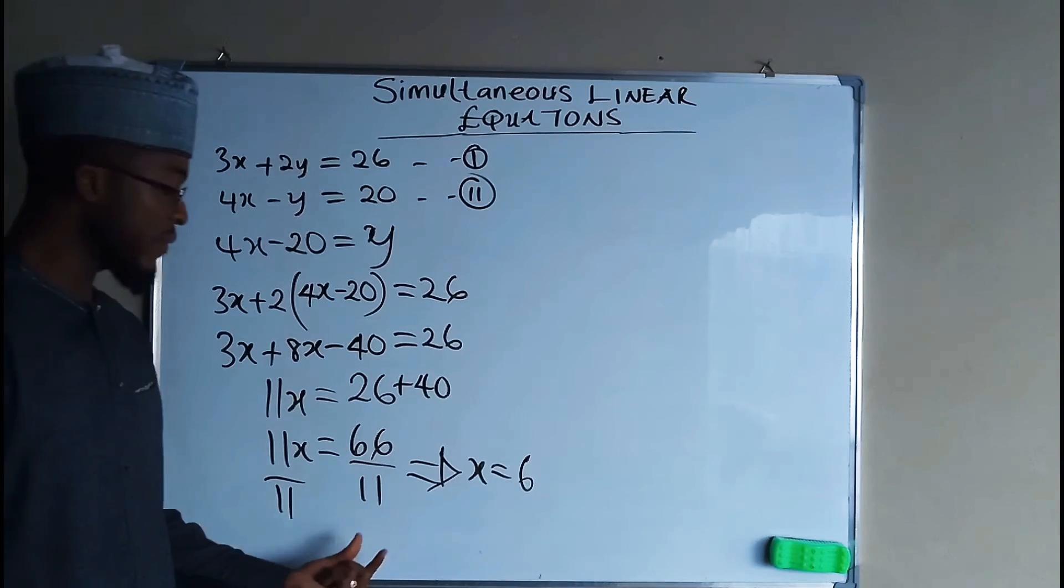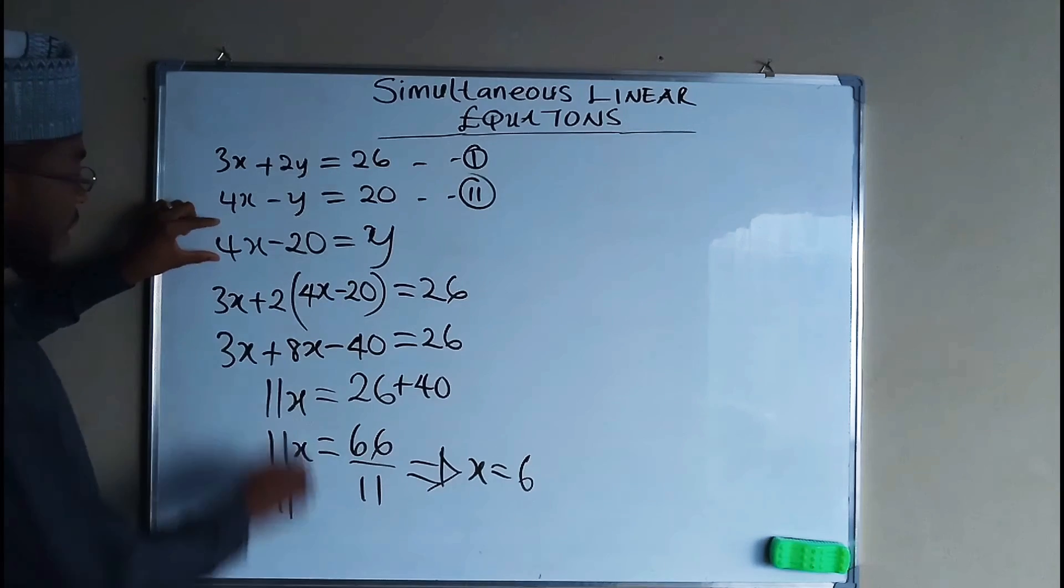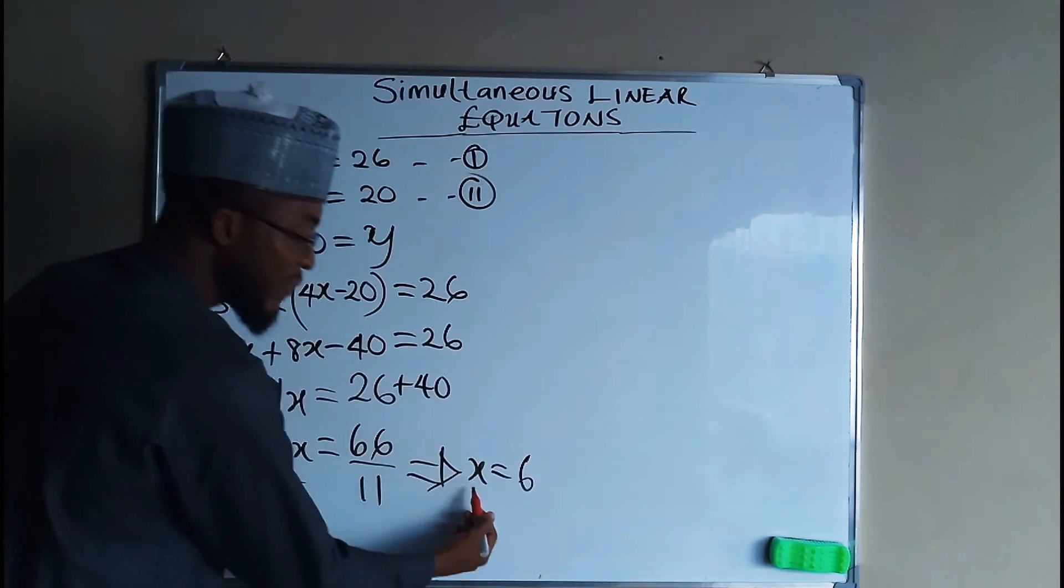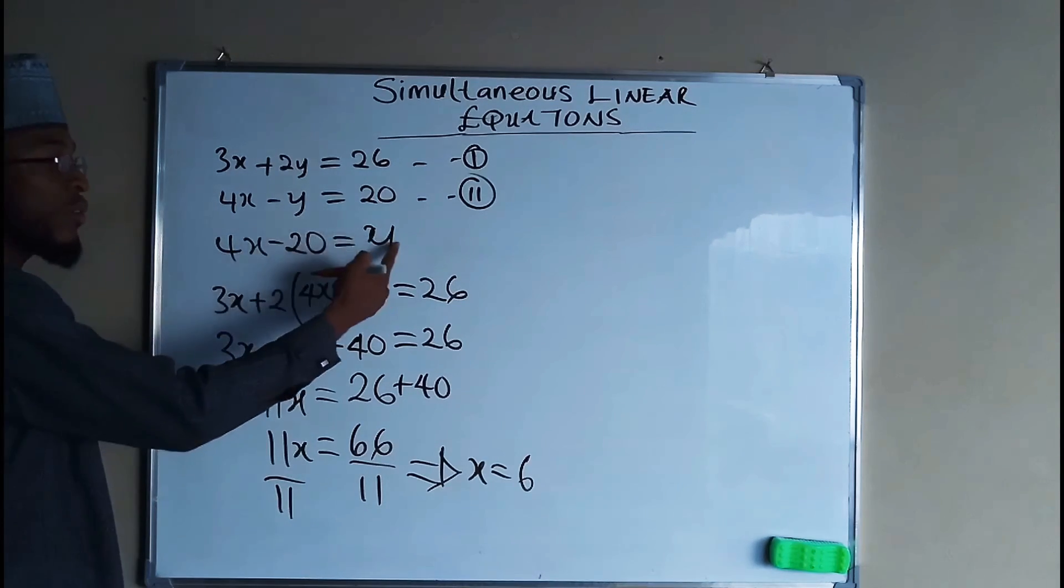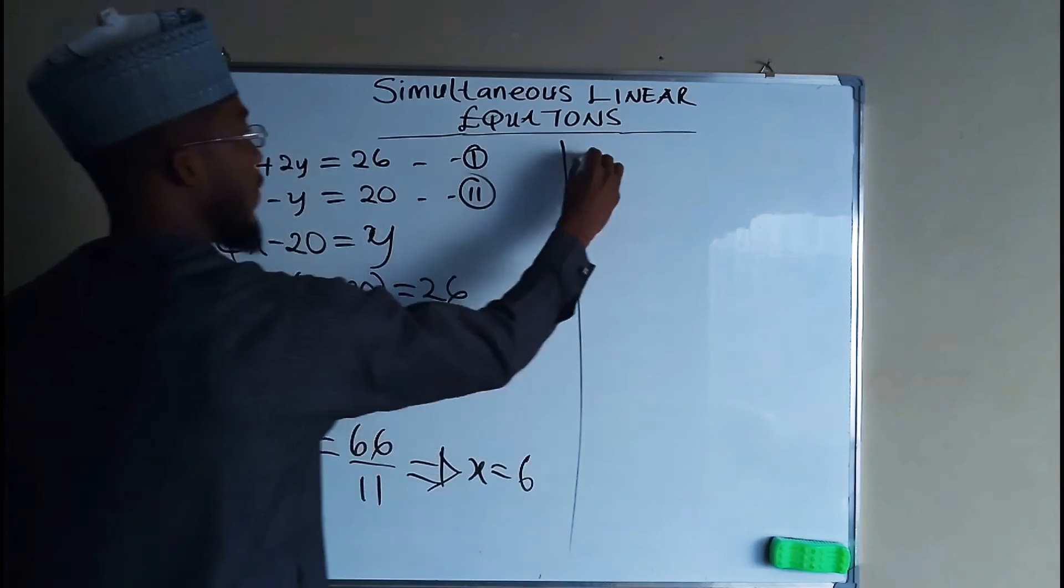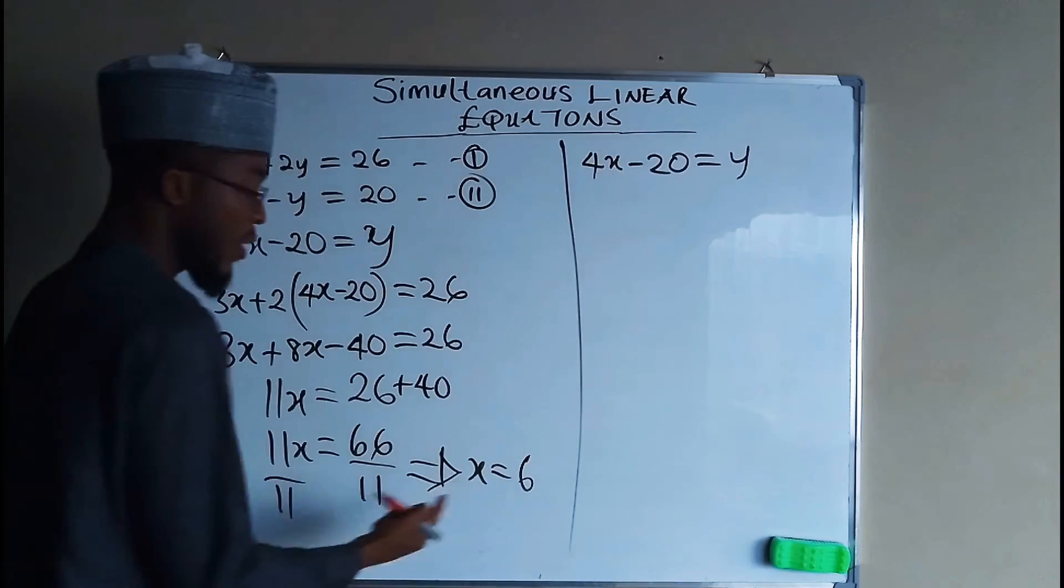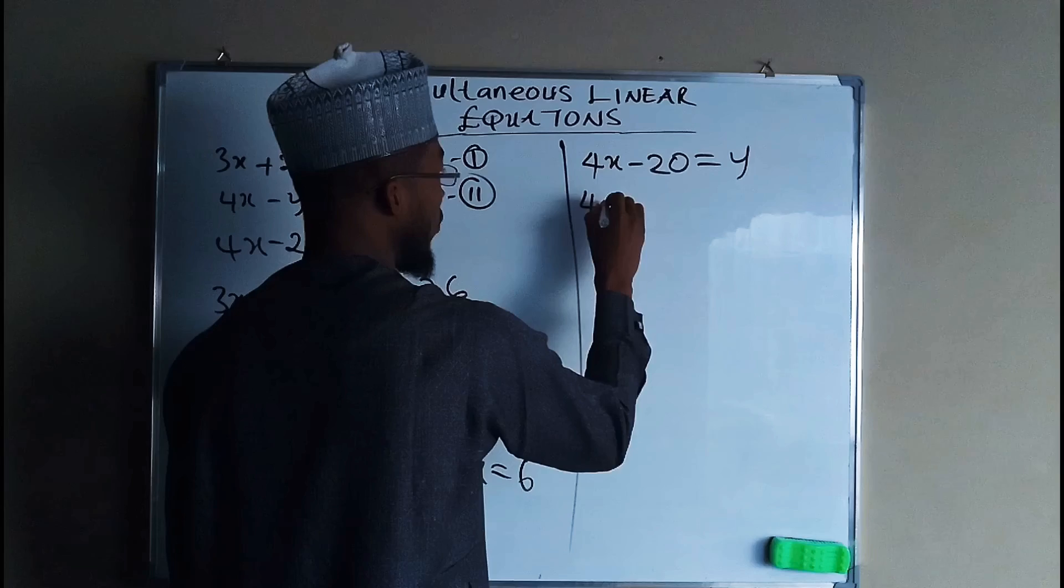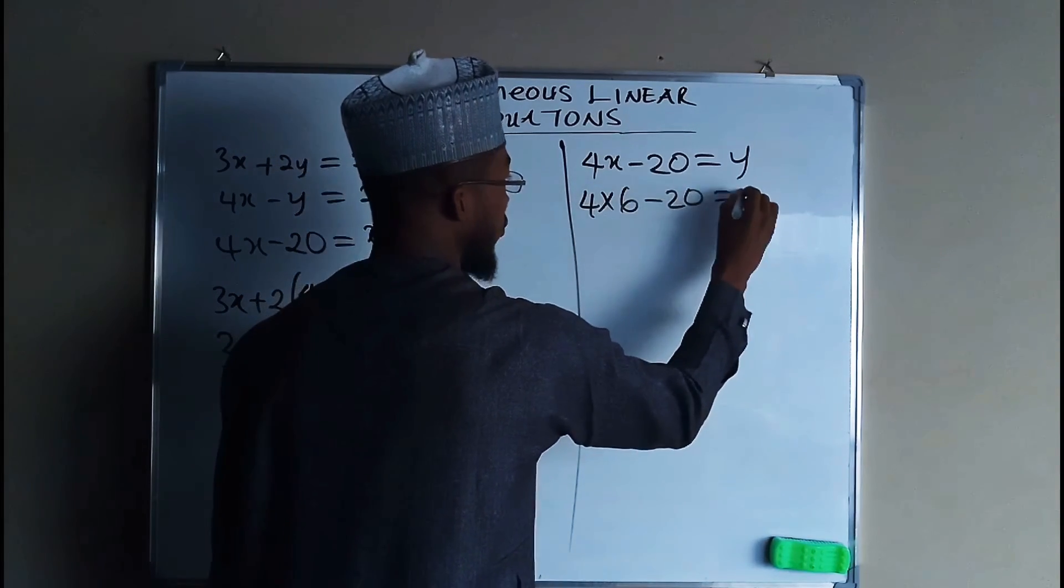Remember we have 4x minus 20 to be equal to y. So by substituting the value of x to be equal to 6 in this main equation, you are going to obtain the value of y. So 4x minus 20 is equal to y, but our x is equal to 6. So we have 4 times 6 minus 20 equals to y.